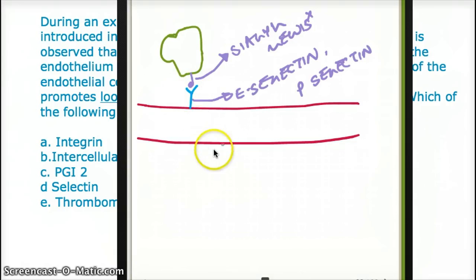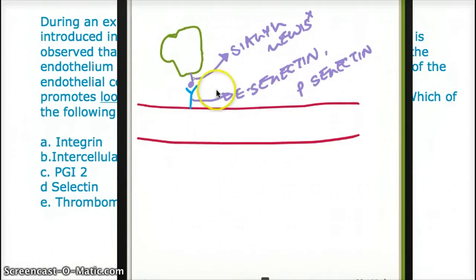E-selectin and P-selectin are responsible for easy binding and easy breaking off of bonds, so that neutrophils can roll onto the blood vessels — that's our rolling. If you want to follow along, this information can be found in First Aid, page 247, in the pathology section.